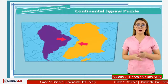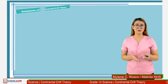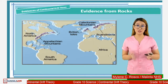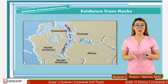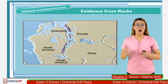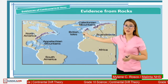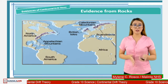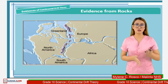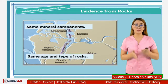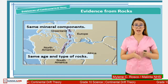Aside from the continental jigsaw puzzle or the matching up of the edges of the continents, Alfred Wegener noticed that large geological features such as mountain ranges seem to match up when the continents are put together. You can see here the Appalachian mountain in North America and the Caledonian mountain — when they are brought together, it seems like they are just one long mountain range. Wegener also found out that these two mountain ranges have the same mineral components and the same type and age of rocks.